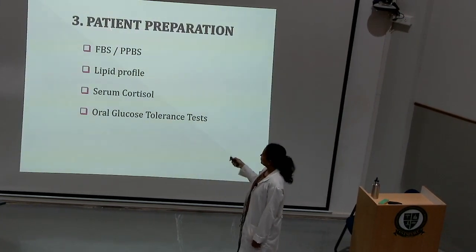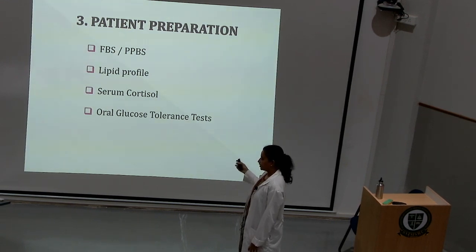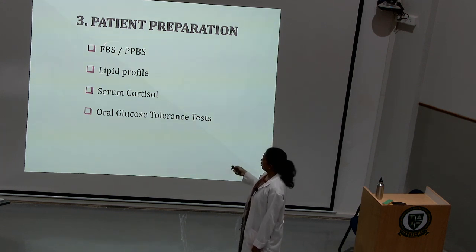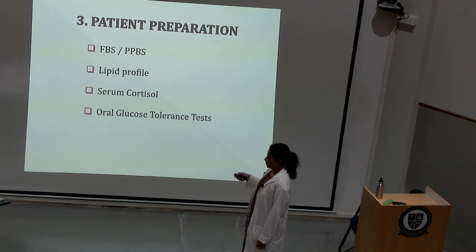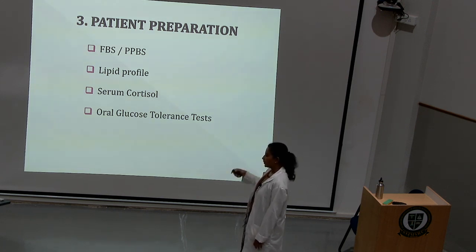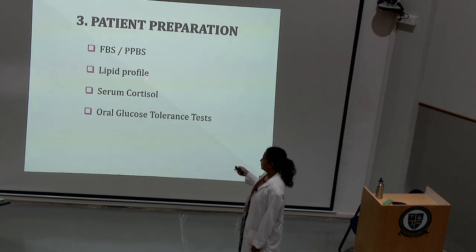Once you receive an order for a test, there may be certain tests which can be done immediately, or there may be tests which require prior preparation from the patient. For example, if the test is fasting blood sugar, you need to ask the patient whether he has been fasting for nearly 10 to 12 hours overnight. If yes, you can proceed with blood collection. Otherwise, you explain to the patient how to come prepared the next day. Similarly, for postprandial blood sugar, it is nearly two hours after a proper meal that you take the blood. For lipid profile, a fasting sample is preferred.